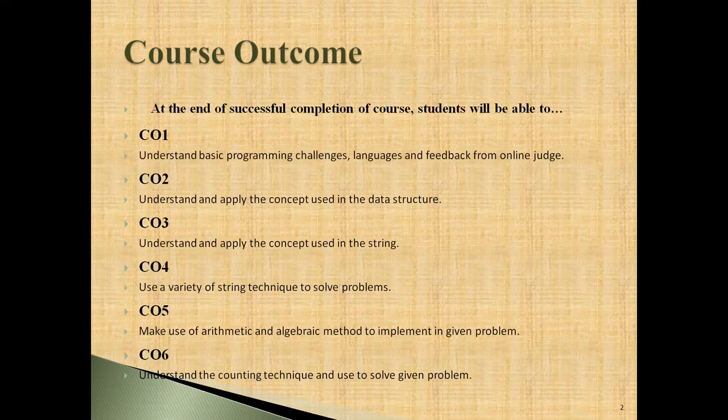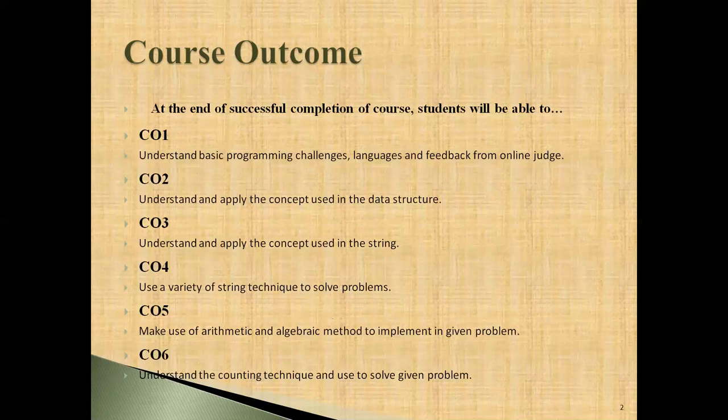The course outcomes consist of CO1 to CO6, representing units 1 to 6 of this subject respectively. For CO1: at the end of successful completion of the course, students will be able to understand basic programming challenges, language, and feedback from online judges. Students will face a number of programming problems and have to use different languages such as C and C++ and Java to solve them.